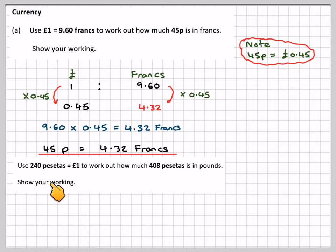Now use that 240 pesetas is equal to 1 pound to work out how much 408 pesetas is in pounds. Show your working. We'll do a similar sort of thing. This time we start with pesetas and then we have pounds.